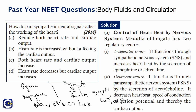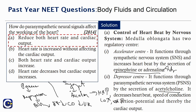Control of heartbeat by the nervous system: the medulla oblongata has two regulatory centers — the accelerator center, which functions through the sympathetic nervous system and increases heartbeat by secretion of epinephrine or adrenaline; and the depressor center, which functions through the parasympathetic nervous system by secretion of acetylcholine (ACH), decreasing heart rate and cardiac output. So the answer is: reduce both heart rate and cardiac output.